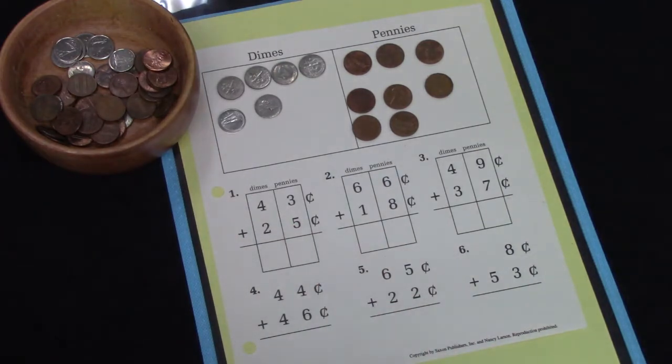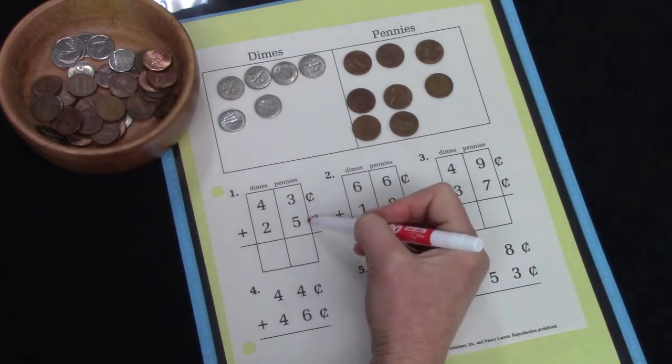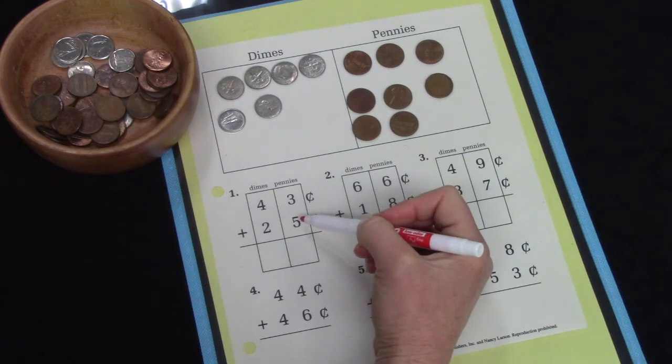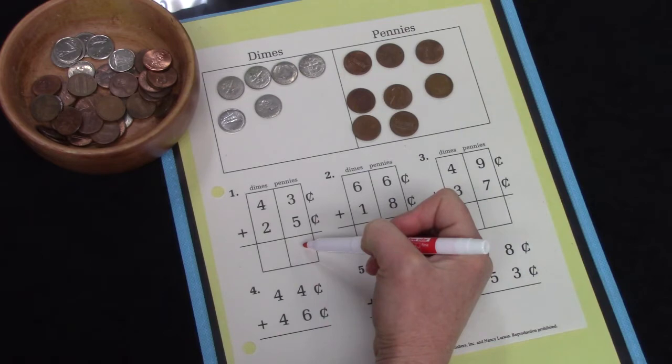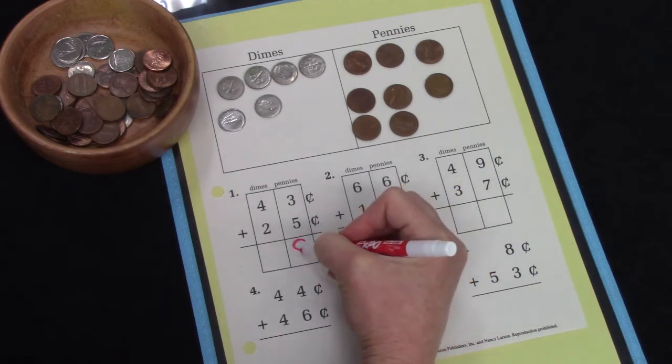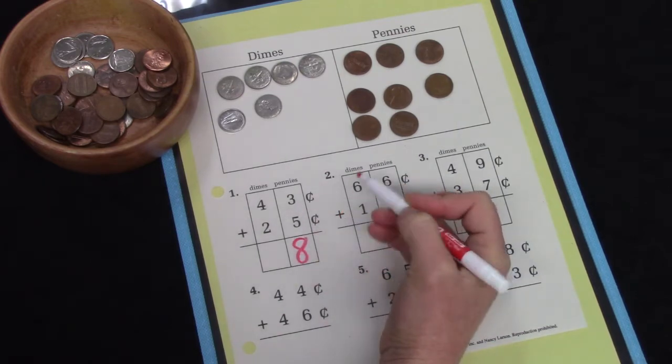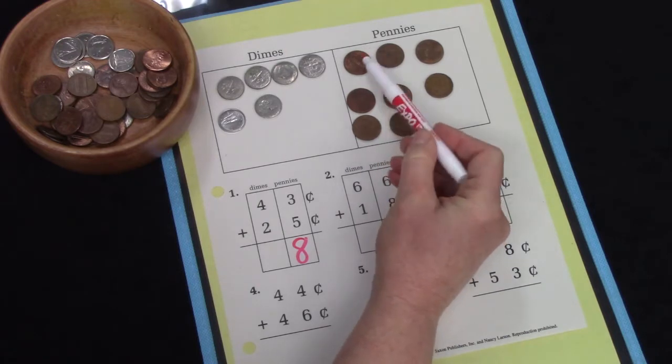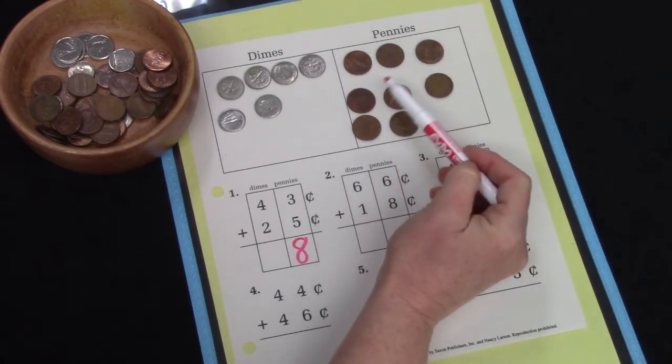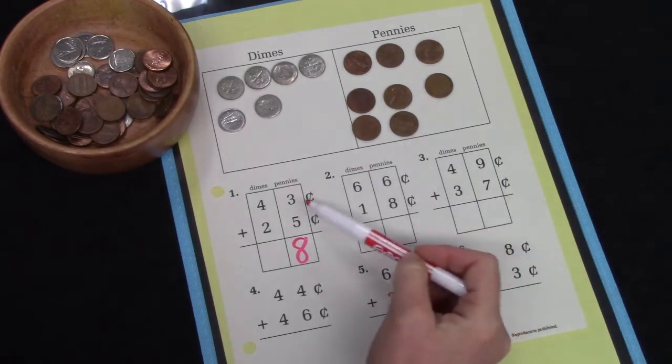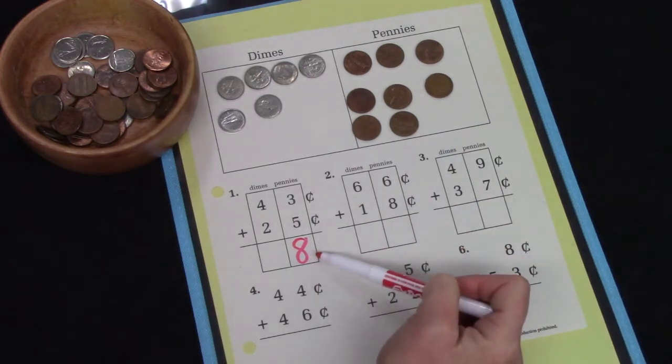When we add we start with our pennies and we're adding 3 plus 5. Well some of you already know the answer to that. You know that it's 8. Some of you might need to actually count your pennies: 1, 2, 3, 4, 5, 6, 7, 8. 3 plus 5 equals 8.